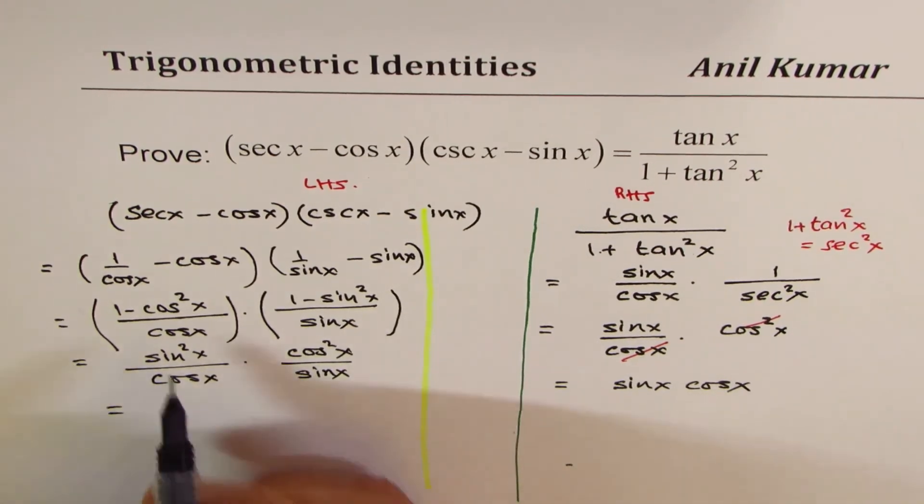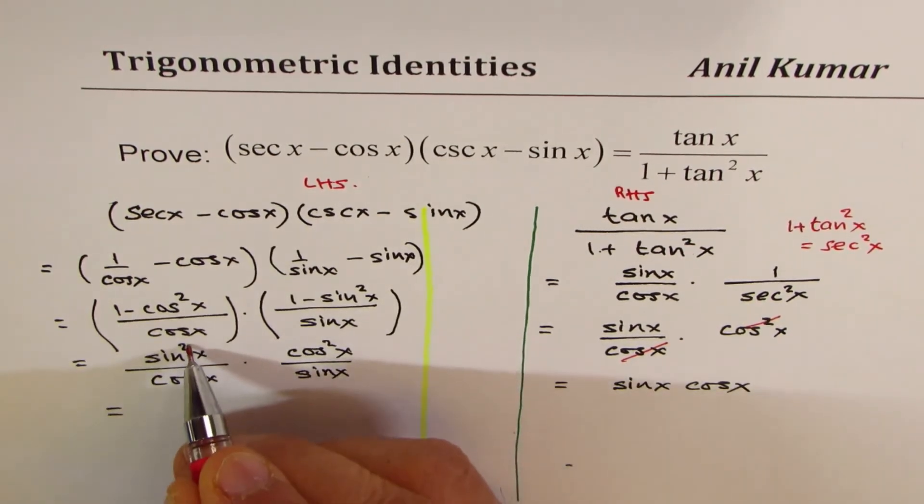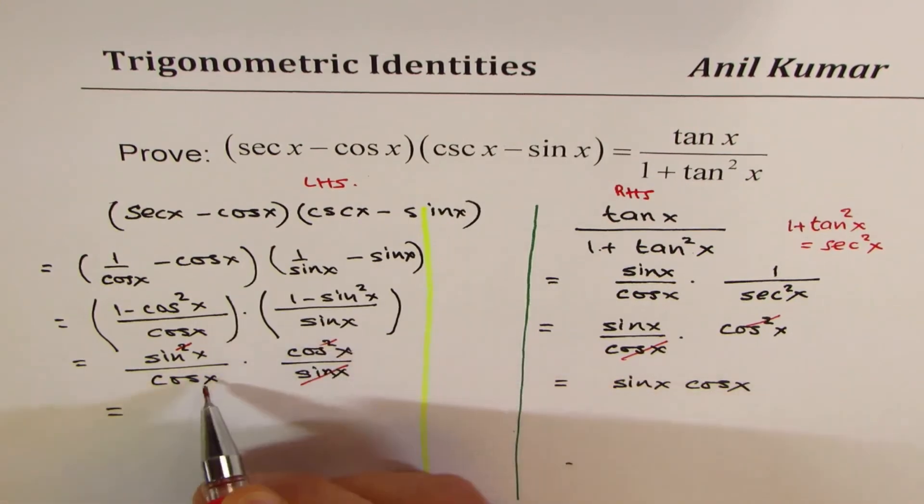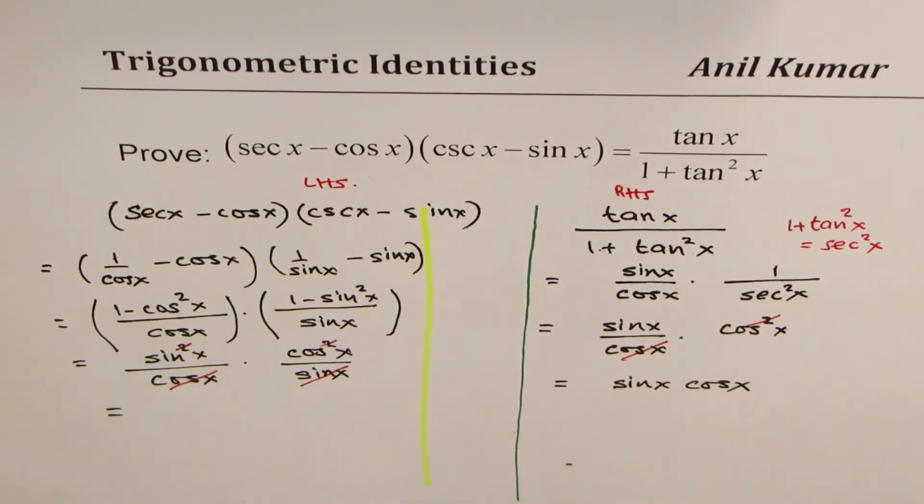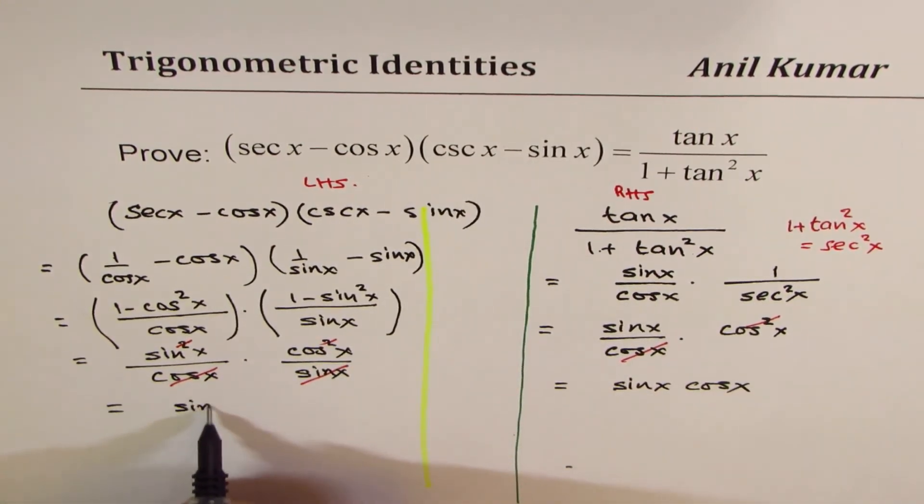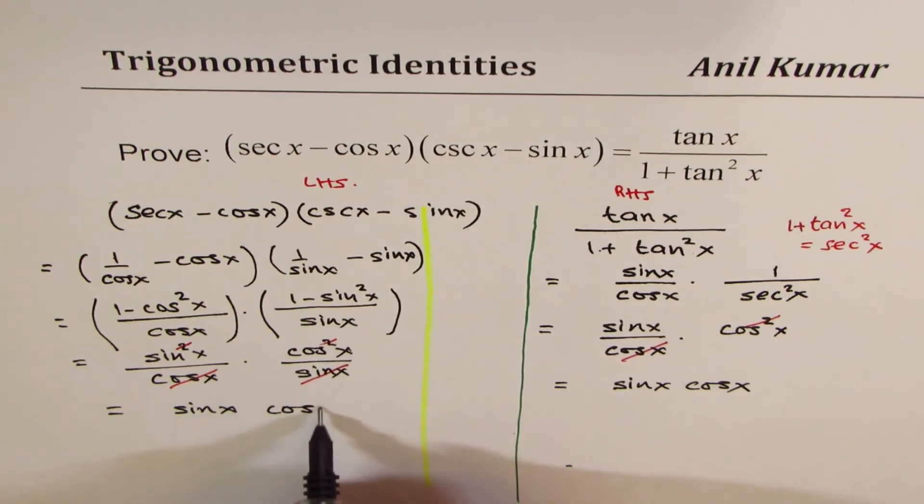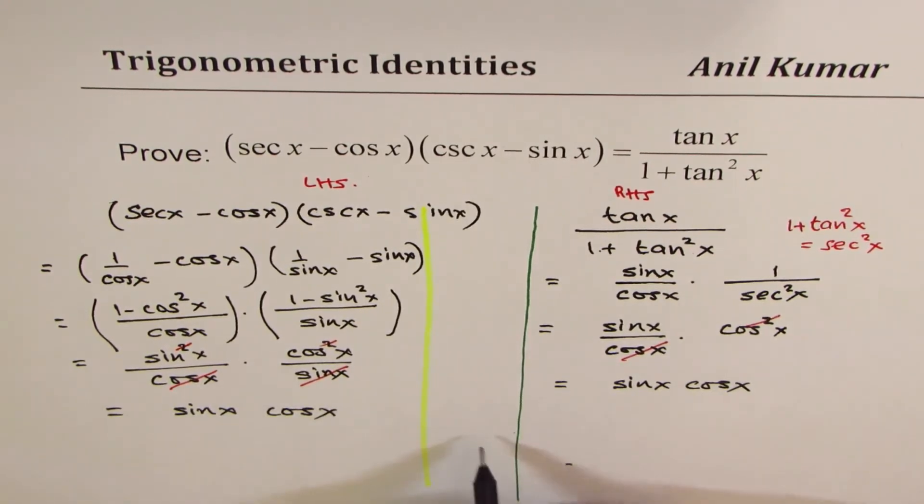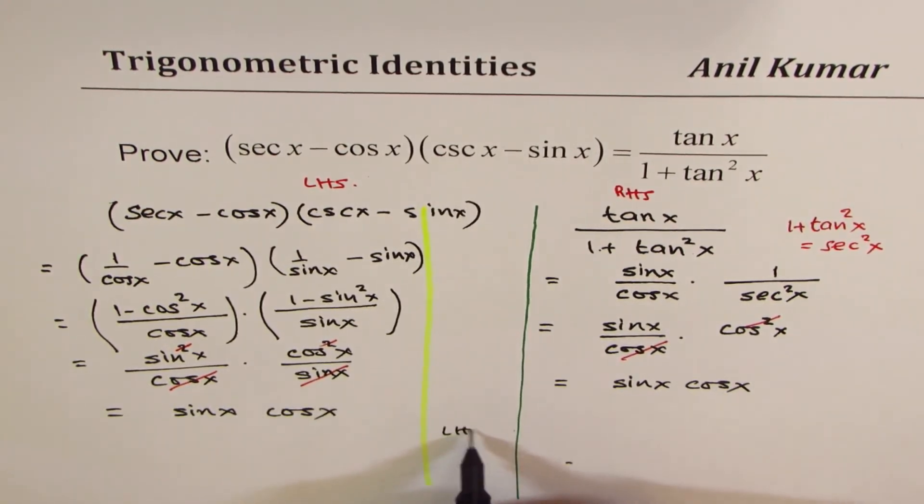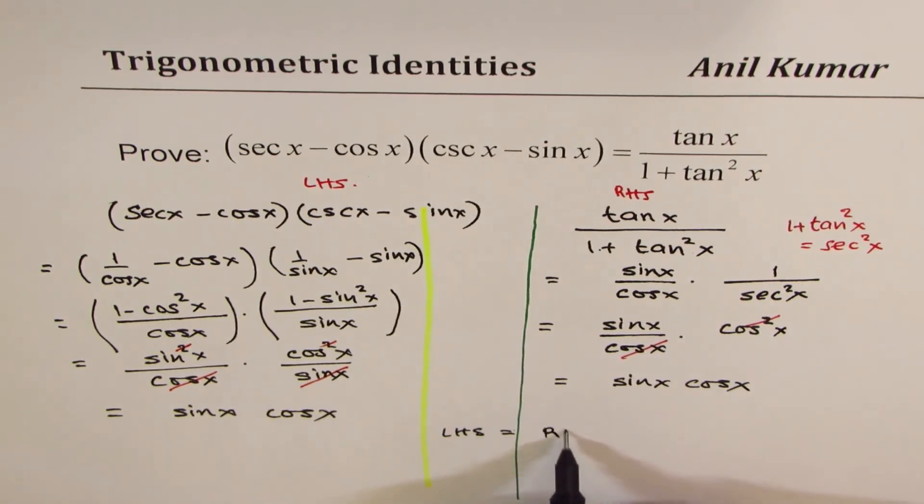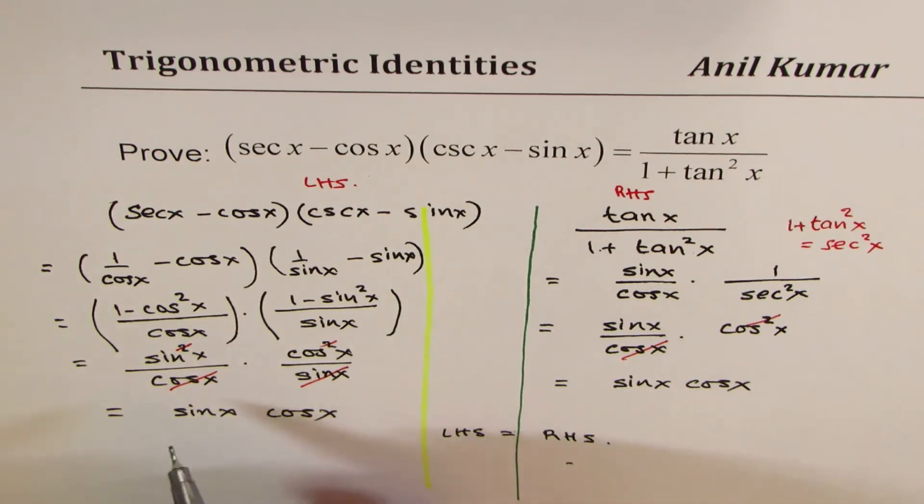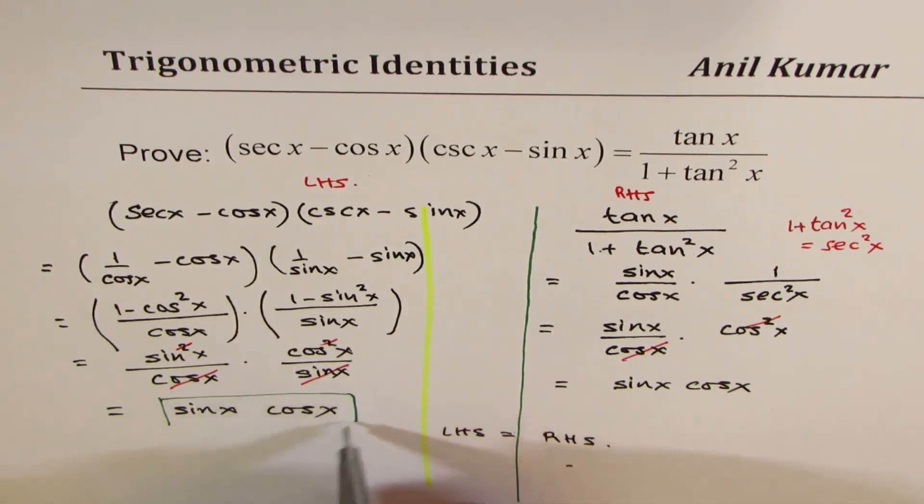We are very close. Here also, we have those square terms, so that cancels. We are left with sin x cos x. Both sides are sin x cos x, so left-hand side equals right-hand side. We get both sides as sin x cos x, and they are equal.